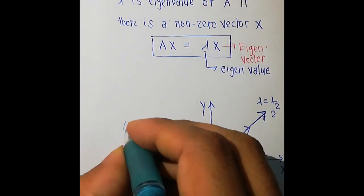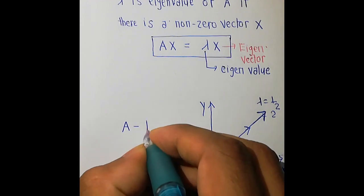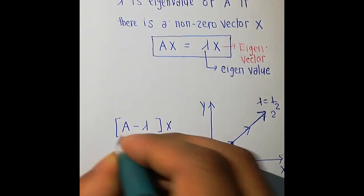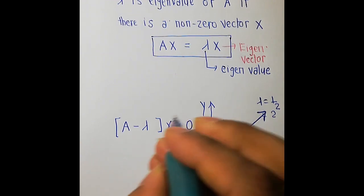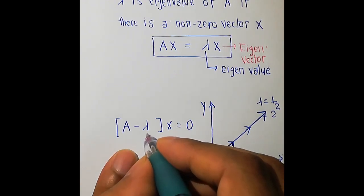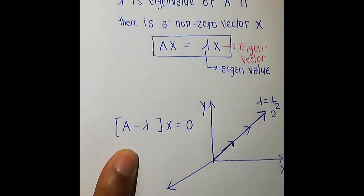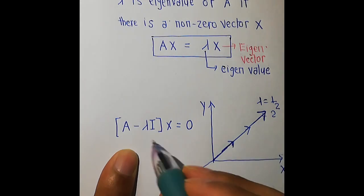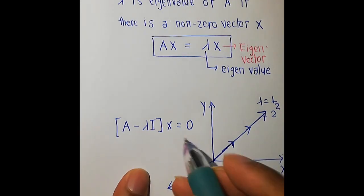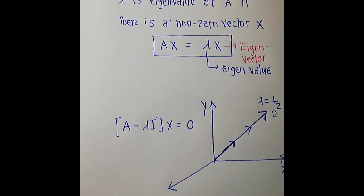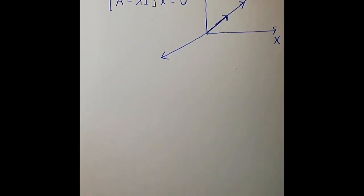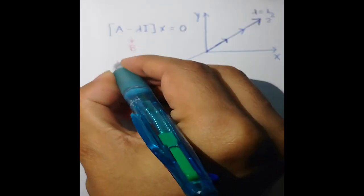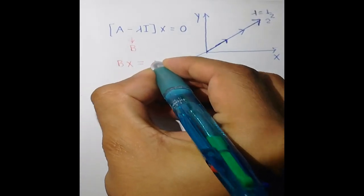This equation can be rewritten as (A - λI)x = 0. Since lambda is a scalar, we cannot subtract a number directly from a matrix, so we multiply it by the identity matrix I. Let's call (A - λI) as B, so we have Bx = 0.